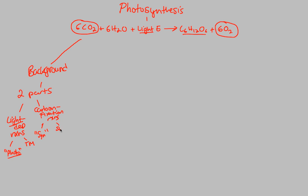The carbon fixation process occurs at the stroma — the fluid interior of the chloroplast, where tons of enzymes are located. That's why the process occurs at that point. Both parts occur in the chloroplast, with specific parts of the chloroplast for each.